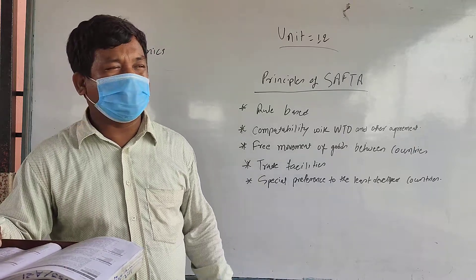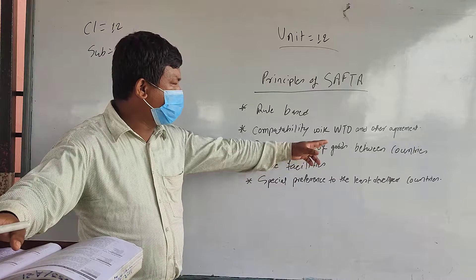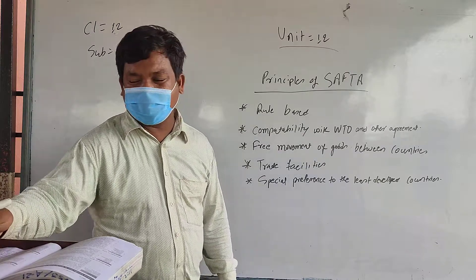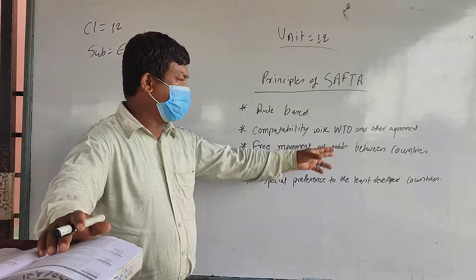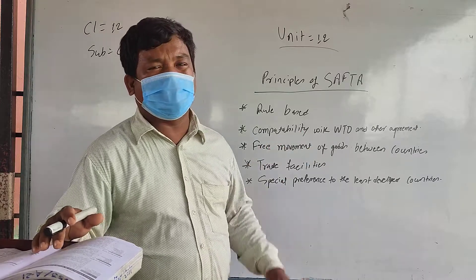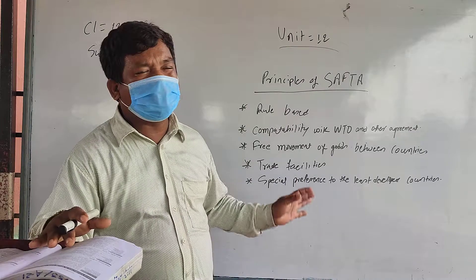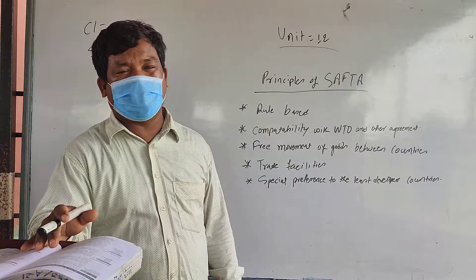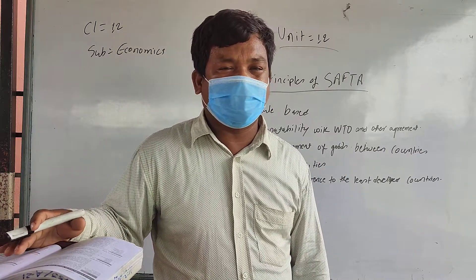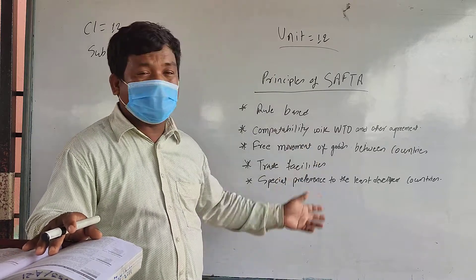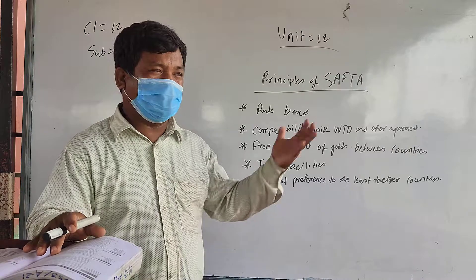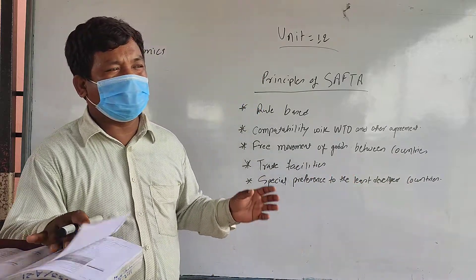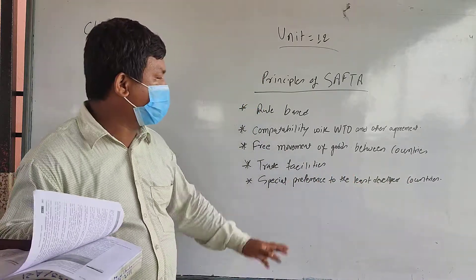Number two is compatibility with WTO and other agreements. SAFTA is established to have some compatibility with WTO and other agreements. It is related to WTO because SAFTA is also established to facilitate trade among SAARC countries — easily, without restriction, without any difficulties. WTO focuses on all countries of the world, but SAFTA is within only SAARC nations. However, their systems and main motives are similar, so it is compatibility with WTO and other agreements.